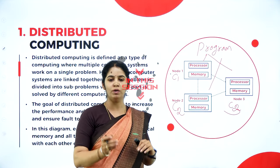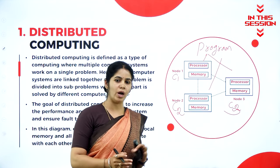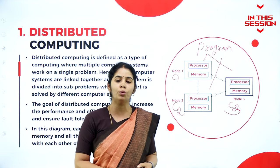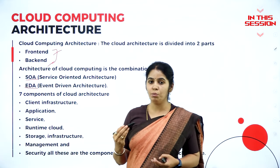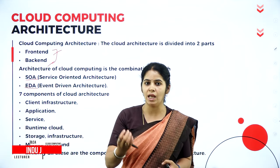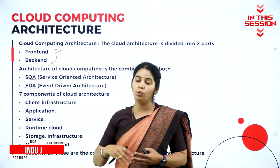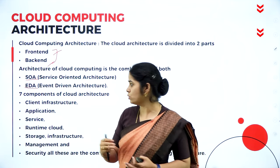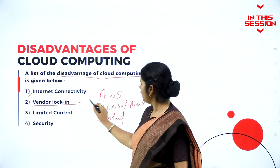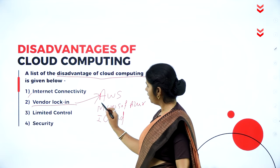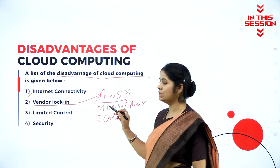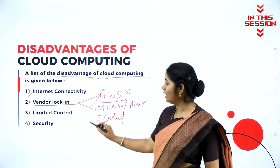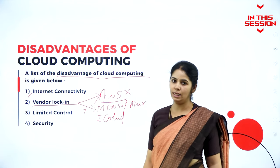The program execution of a single program is distributed among different computers — that is called distributed computing. Service-oriented means whenever we need the service, we can access it. Whenever we are doing a particular event or solving a particular problem, we can access the resources. When initially I switch to AWS and then don't want those services and want to switch to Microsoft, it is not so easy.